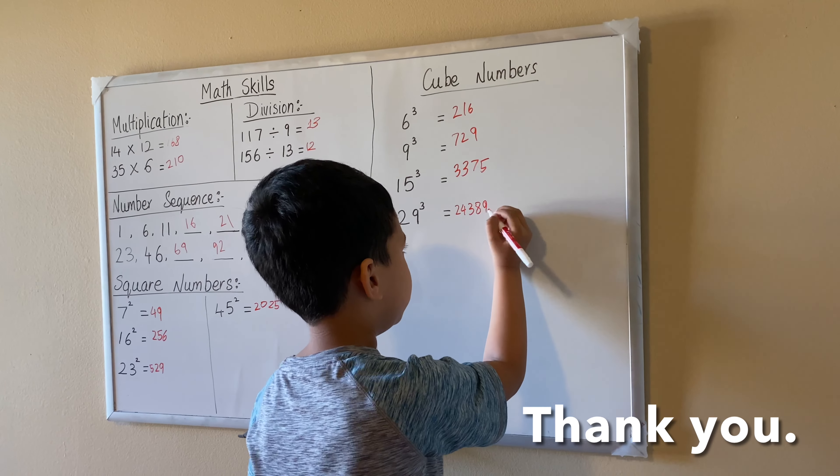Next, let's go to square numbers. 7 squared equals 49. 16 squared equals 256. 23 squared equals 529. And 14 squared equals 2,025.